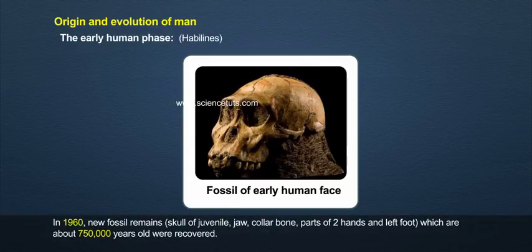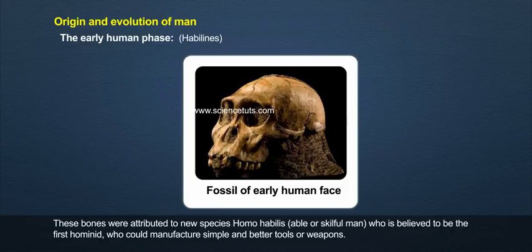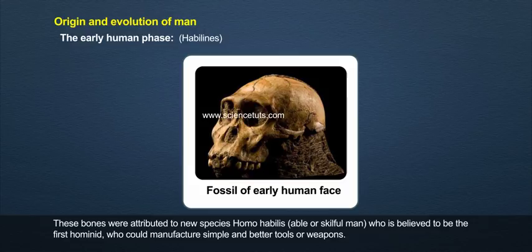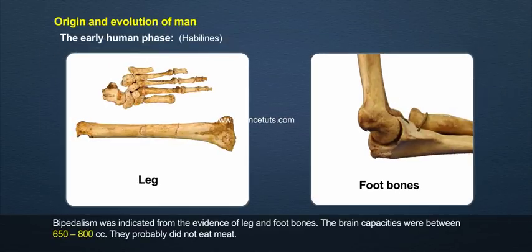The Habilines: In 1960, new fossil remains — skull of juvenile jaw, collarbone, parts of two hands and left foot — about 750,000 years old were recovered. These bones were attributed to a new species, Homo habilis, the able or skillful man, believed to be the first hominid who could manufacture simple and better tools or weapons. Bipedalism was indicated from evidence of leg and foot bones. Brain capacities were between 650 to 800 cc. They probably did not eat meat.